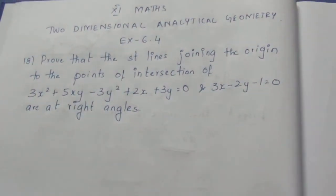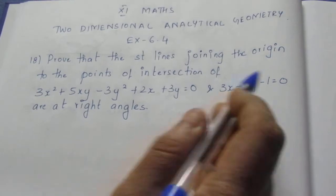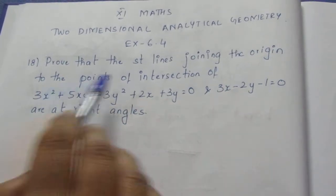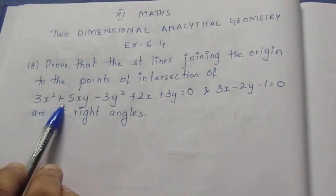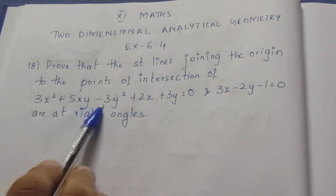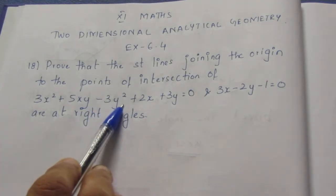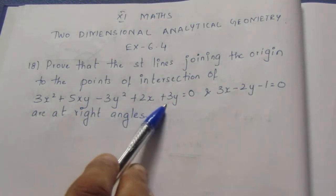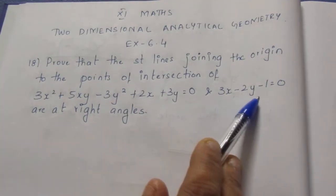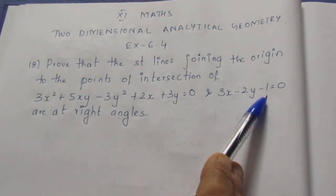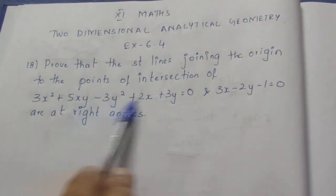Let's see the question. Prove that the straight lines joining the origin to the point of intersection of 3x² + 5xy − 3y² + 2x + 3y = 0 and 3x − 2y − 1 = 0 are at right angles.